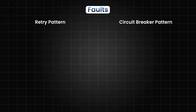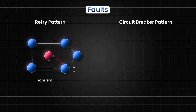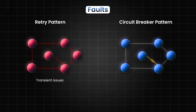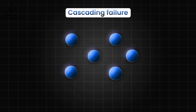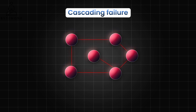The retry pattern and the circuit breaker pattern serve different purposes in managing the resiliency of applications in a distributed environment. The retry pattern is designed to help an application deal with transient issues. The circuit breaker pattern aims to prevent an application from continuously attempting an operation that is likely to fail, especially in persistent fault scenarios which might take longer to resolve. It helps prevent cascading failures and provides a way to gracefully handle service failures. In a microservices architecture, services are interconnected, and a cascading failure occurs when a failure in one service triggers a chain reaction of failures in other dependent services, potentially leading to a system-wide outage.